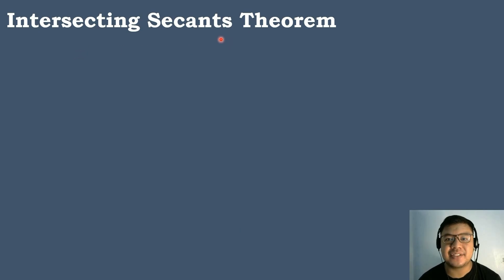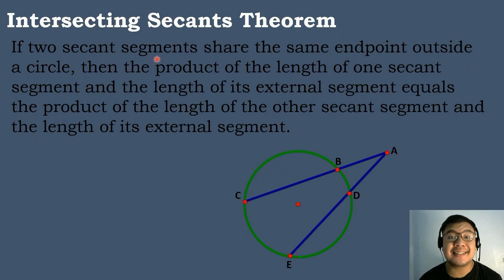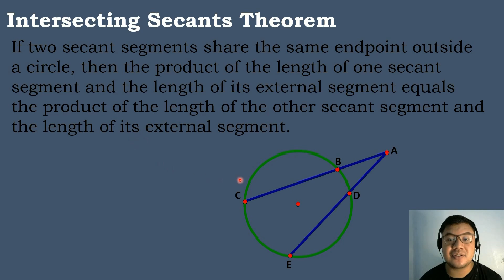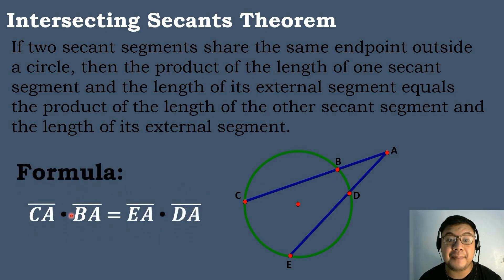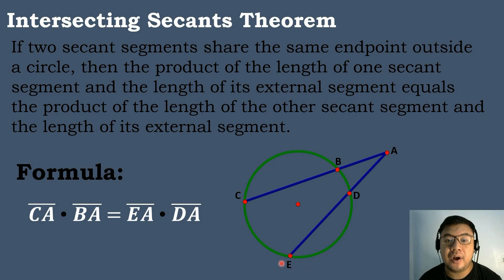Let's now discuss the Intersecting Secants Theorem. It states that if two secant segments share the same endpoint outside the circle, then the product of the length of one secant segment and the length of its external segment equals the product of the length of the other secant segment and the length of its external segment. We have two secant segments: CA and EA. The formula is: segment CA times segment BA equals segment EA times segment DA.